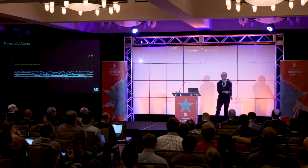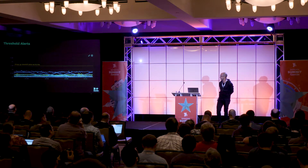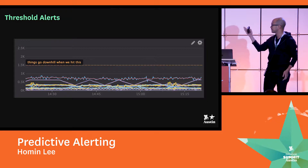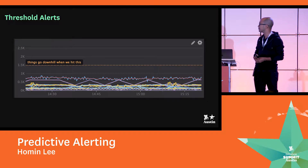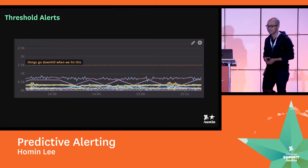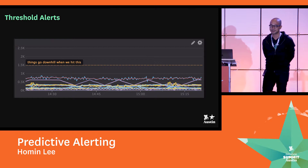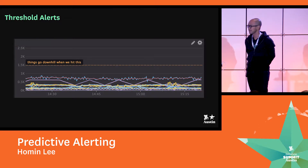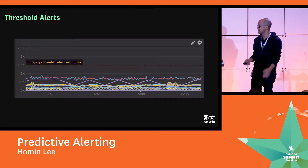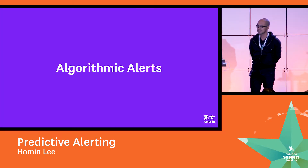Automated alerts are essential to monitoring, and Datadog offers the tried and true threshold alerts. You have a threshold here at 1.5k, you hit that, things go downhill apparently. They're very effective for detecting many types of issues in your infrastructure and applications. But there are situations where threshold alerts are impossible to set properly, and so for these things, we have algorithmic alerts.